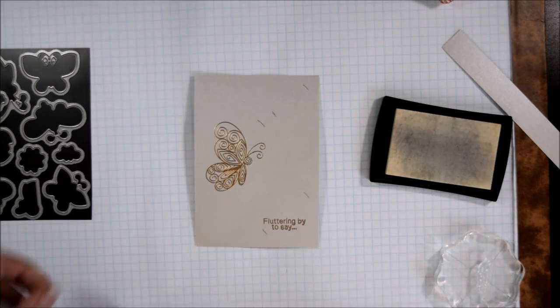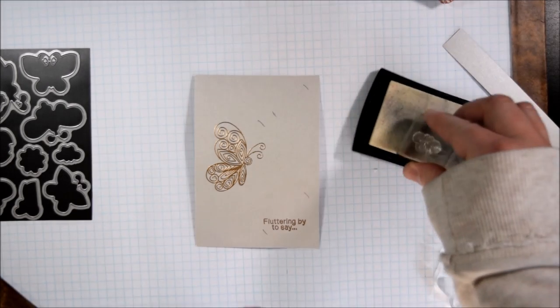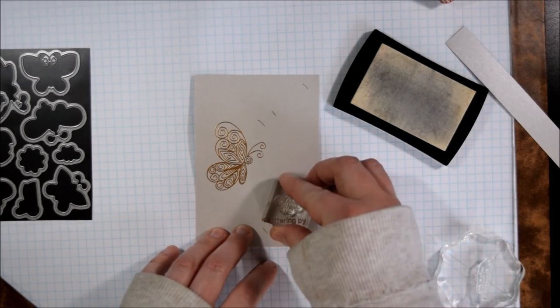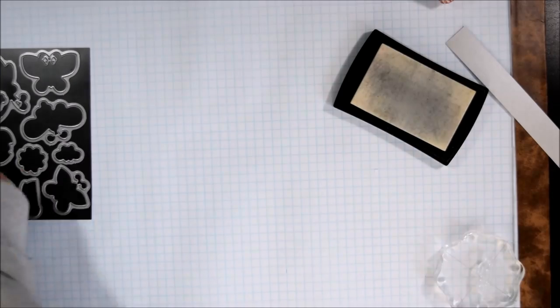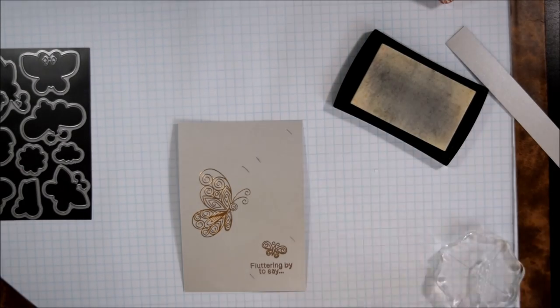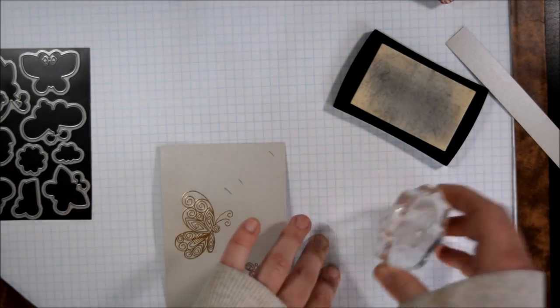I find that even though these sentiments are kind of fine and they're small sentiments you can easily emboss them. I decided to go with the fluttering by sentiment because it sort of just trails off, this is 'fluttering by to say dot dot dot', and so therefore you're going to be able to fill in later whatever sentiment you want for the card, so this way it can be a birthday card later on if I wanted to.